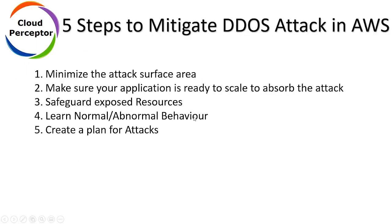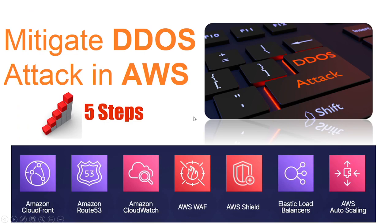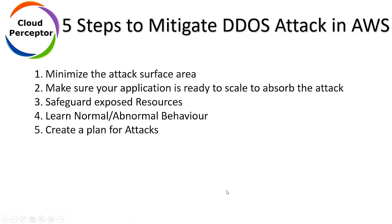Third, safeguard all exposed resources using AWS Shield and the Web Application Firewall. Fourth, learn normal and abnormal behavior — you should study both kinds of behavior. Fifth, plan for artificial attacks. Create a plan and carry it out on a regular basis to learn about the abnormal behavior of your application.